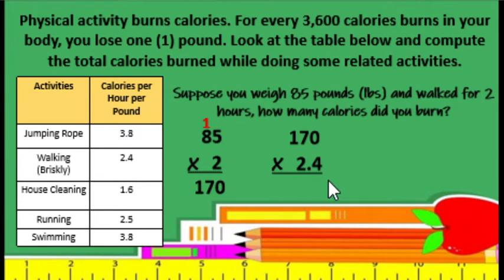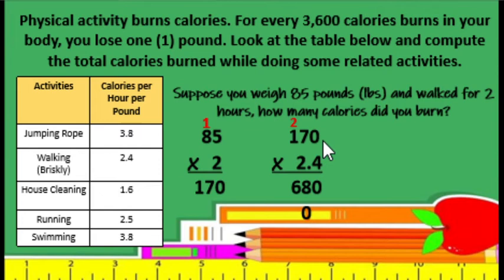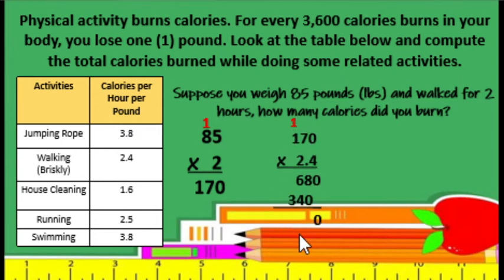And then next step, we are going to multiply as if we are multiplying whole numbers. So 4 times 0 is equals to 0. 4 times 7 is equals to 28, carry 2. Then 4 times 1 is equals to 4, plus 2 is equals to 6. Next: 2 times 0 is equals to 0. 2 times 7 is equals to 14, carry 1. And then 2 times 1 is equals to 2, plus 1 is equals to 3. Then add: 0, 8. Then 6 plus 4 is equals to 10, carry 1. 1 plus 3 is equals to 4.